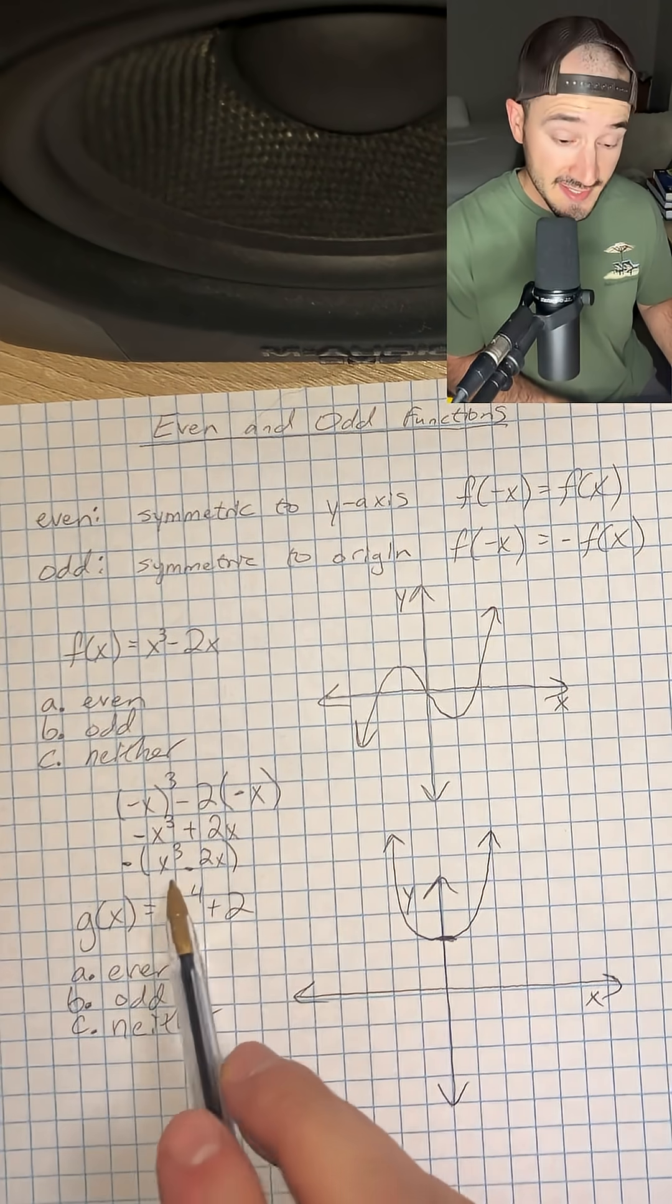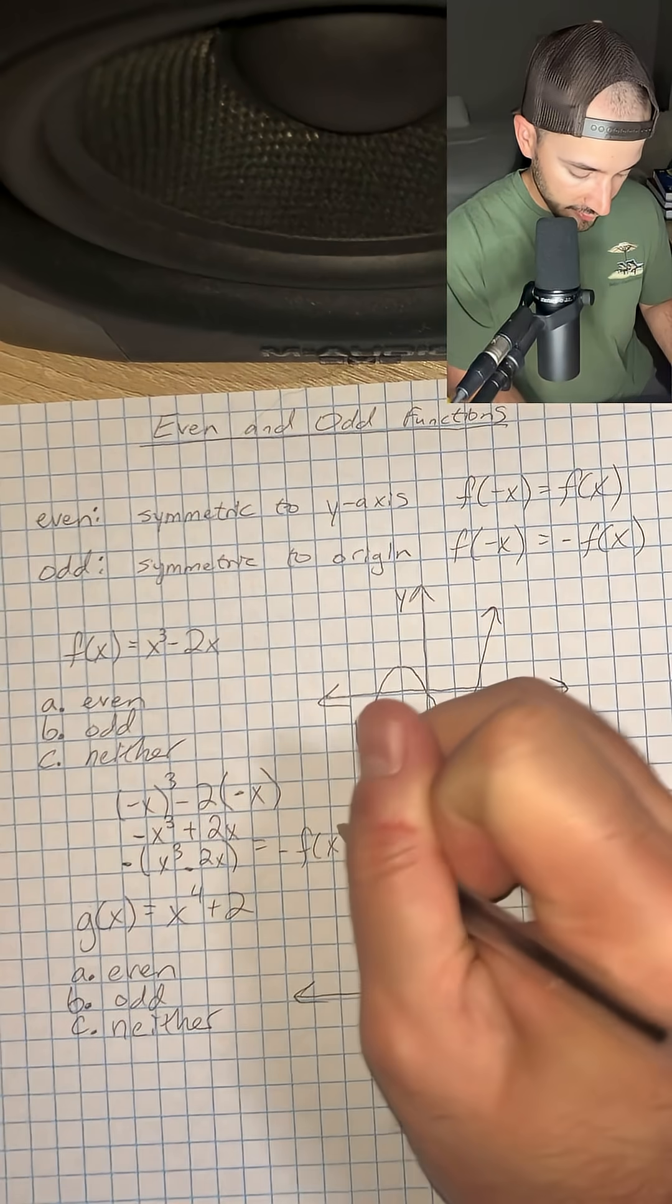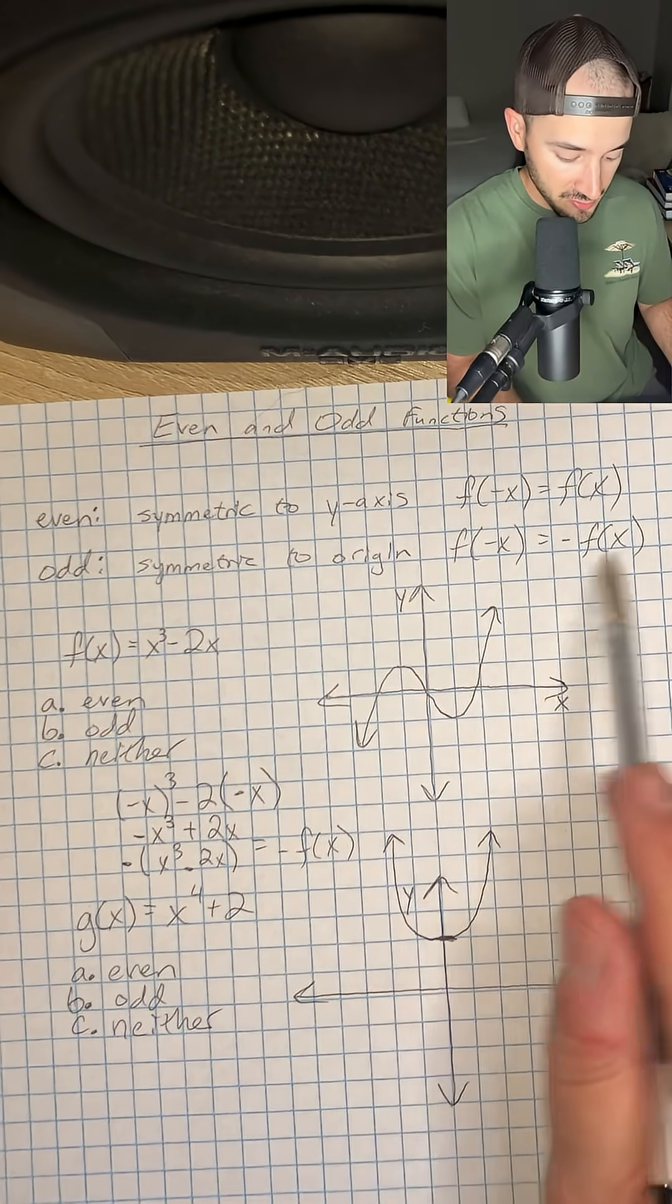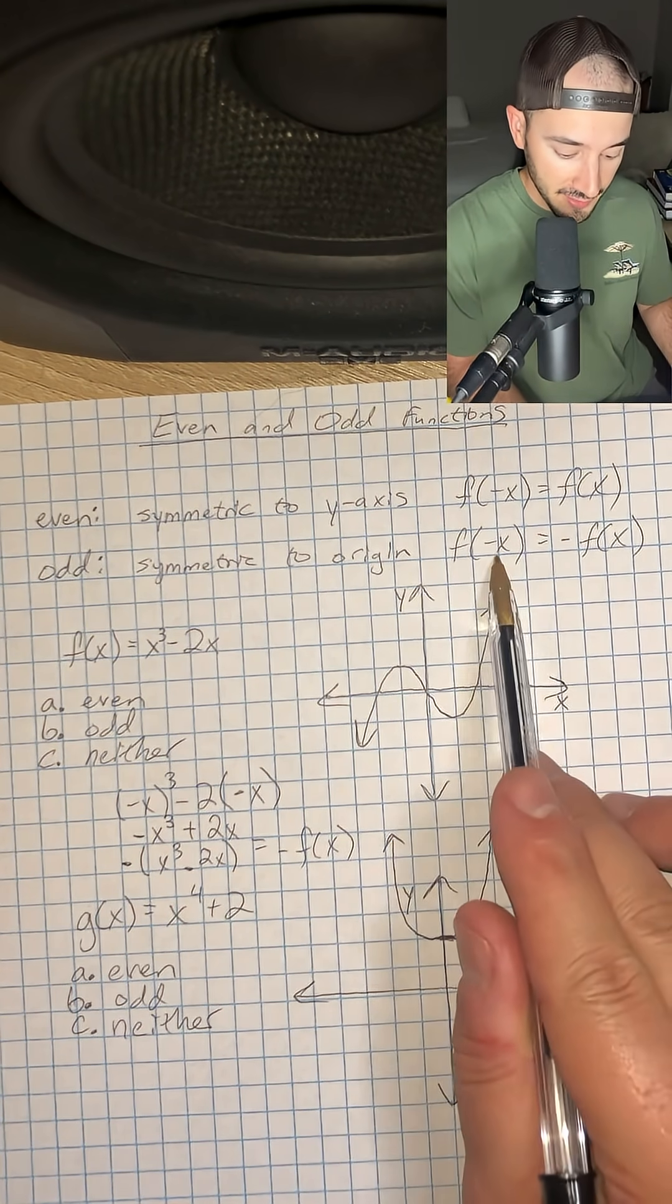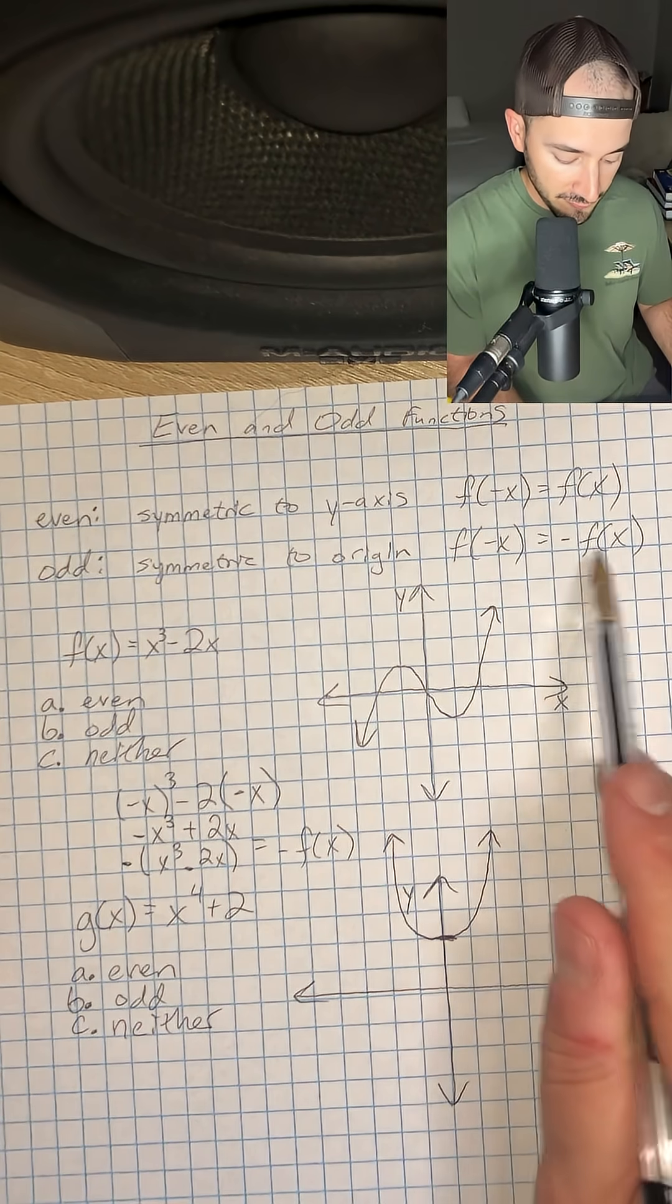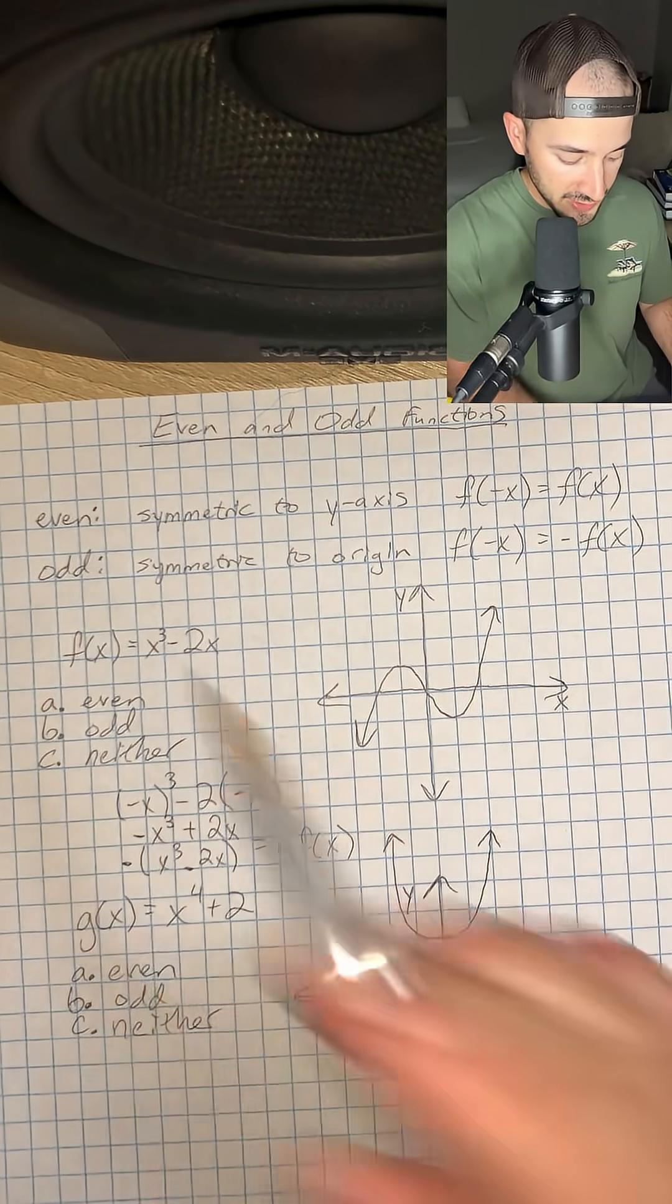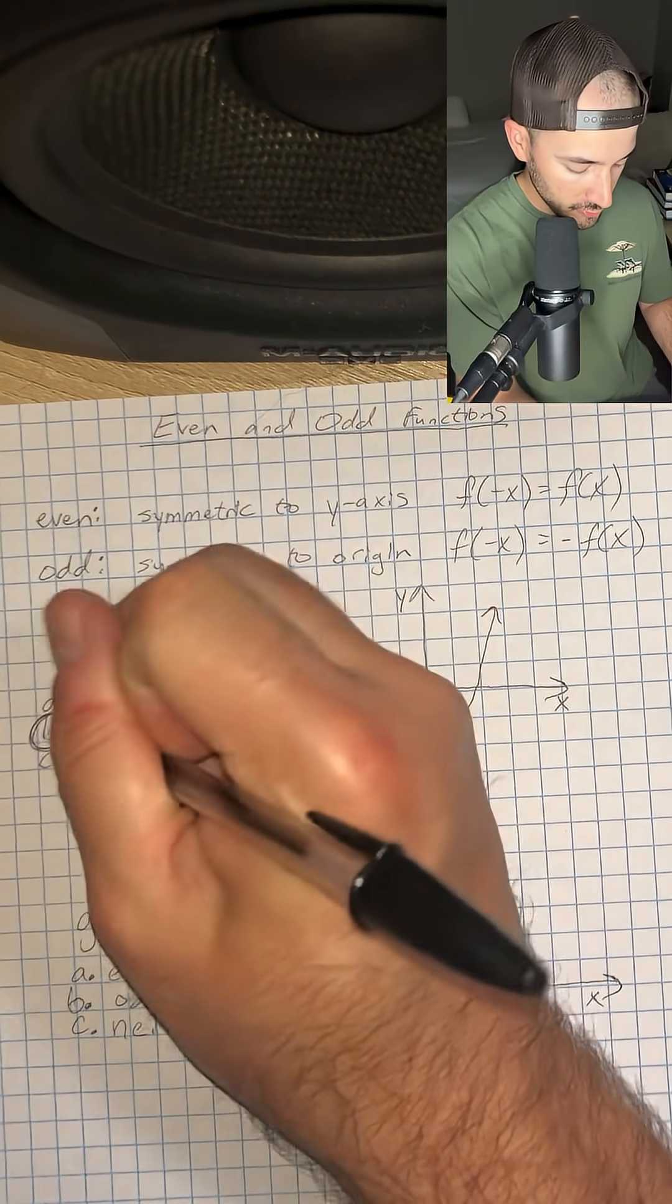Which means that this is equal to negative f of x, just like up here algebraically. We plugged in negative x and we got negative f of x. We got the opposite. So this one definitely is odd. I'm going to circle letter B. Now let's do just one more problem.